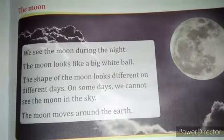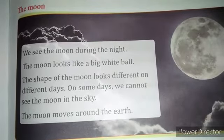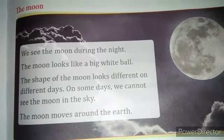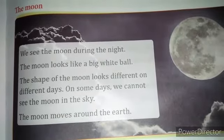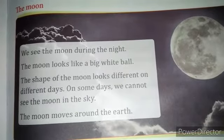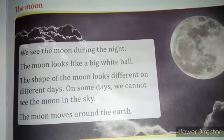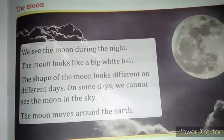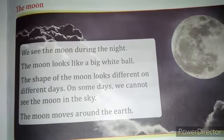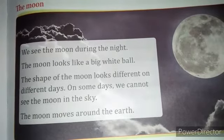The shape of the moon looks different on different days. It appears according to its revolution, so its shape always changes. On some days we cannot see the moon in the sky, because of the revolution process. Due to that we are unable to see the moon at all times.